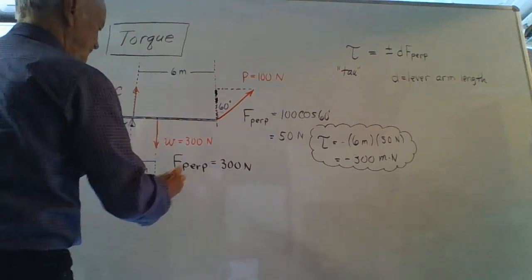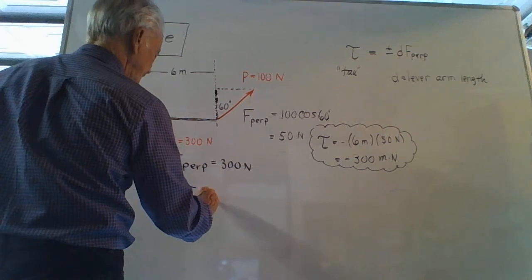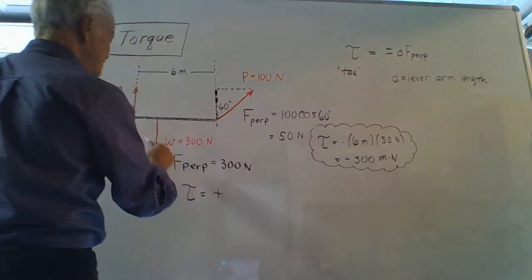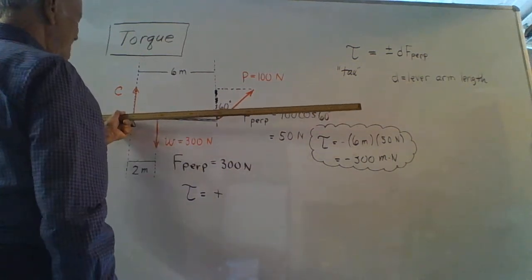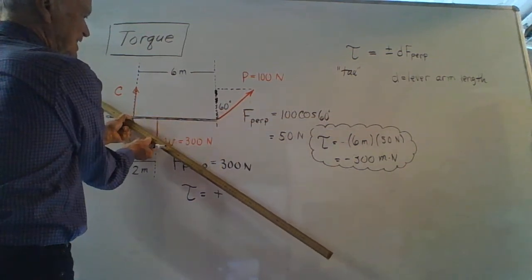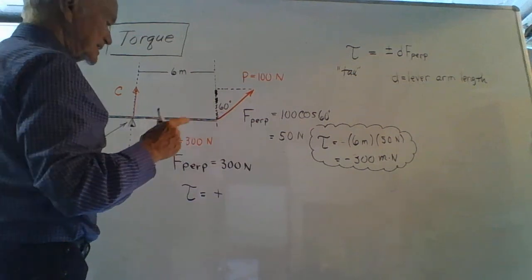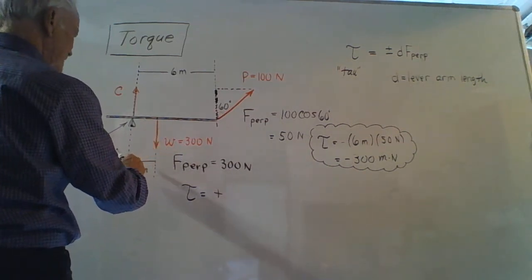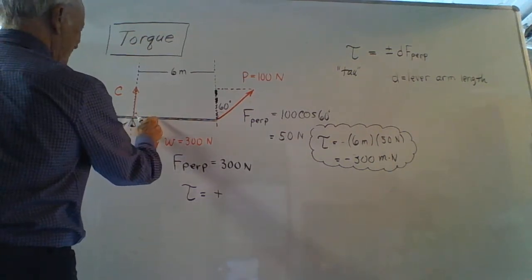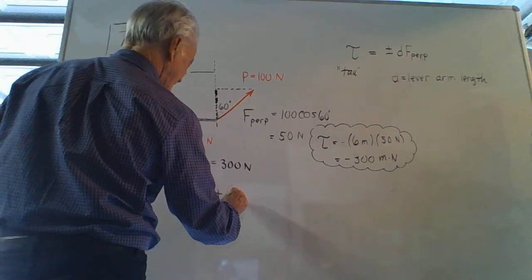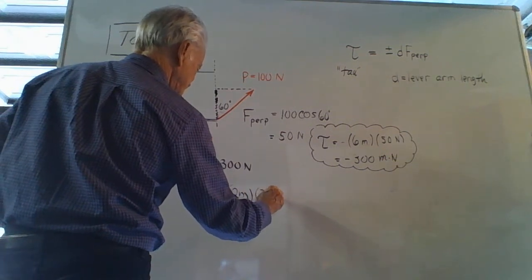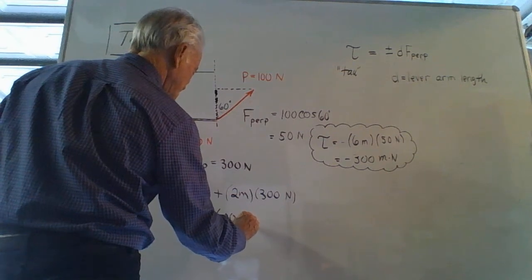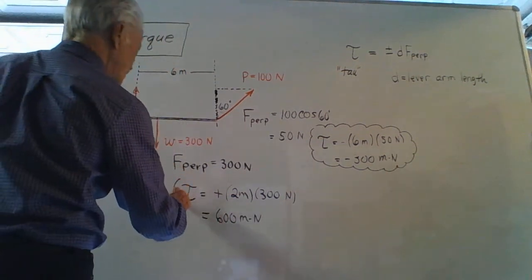Now for the weight force. Its torque is positive because the weight force, if it were the only one acting, would pull down the left side causing a clockwise rotation. By the sign rule, a positive sign is used. The lever arm length for the weight vector is two meters, so the torque is 2 meters × 300 newtons = 600 meter-newtons.